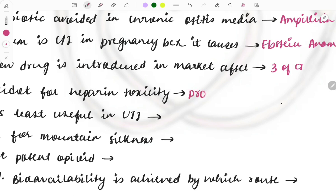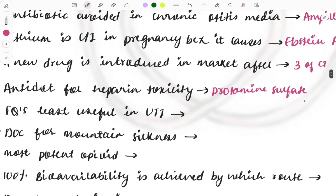You should have a look at all the antidotes for toxicities. For example: protamine sulfate for heparin, N-acetylcysteine for paracetamol (PCT), desferoxamine for iron as already discussed, and flumazenil for benzodiazepines as discussed. There are many such antidote pairs and the list is provided in the videos.